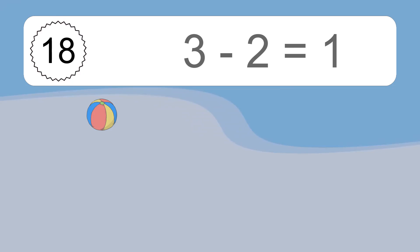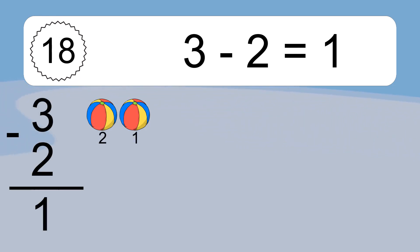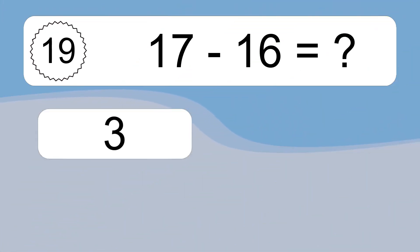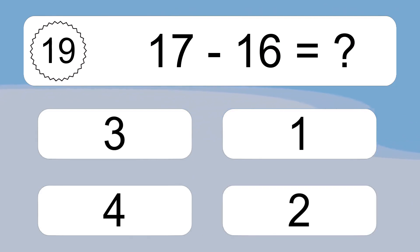3 minus 2 equals what? 3 minus 2 equals 1. Let's count it: 2, 1.